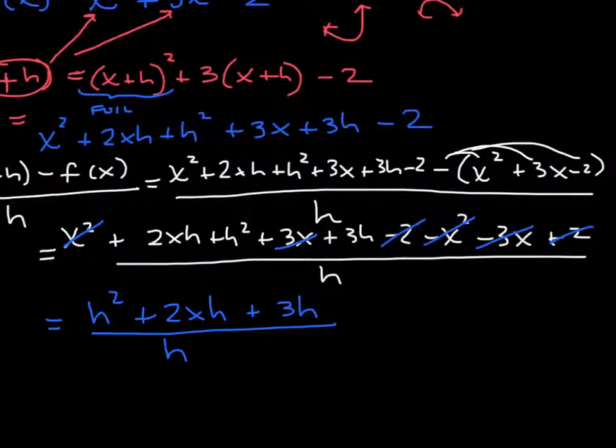And then if I factor an h out of the top, or I can just divide in h. h goes into each one of these terms. h goes into h squared, I can knock off an h there. I divide h into the 2xh and I get +2x. And the h into the 3h I get +3. So that is my difference quotient.